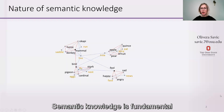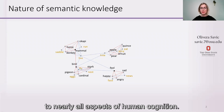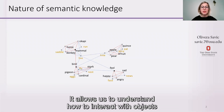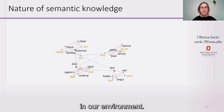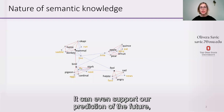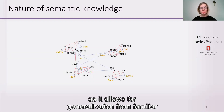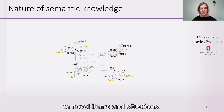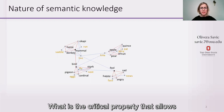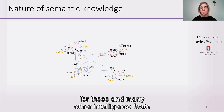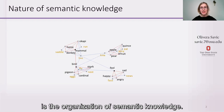Semantic knowledge is fundamental to nearly all aspects of human cognition. It allows us to understand how to interact with objects in our environment, it supports language, it can even support our prediction of future, as it allows for generalization from familiar to novel items and situations. The critical property that allows for these and many other intelligent feats is the organization of semantic knowledge.